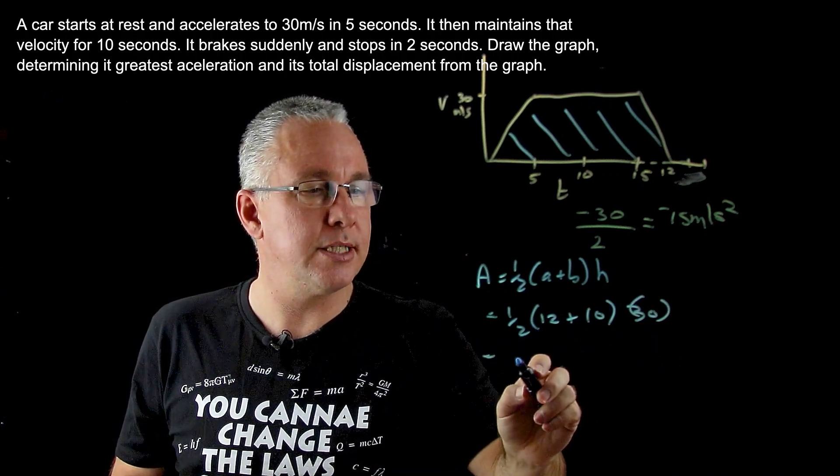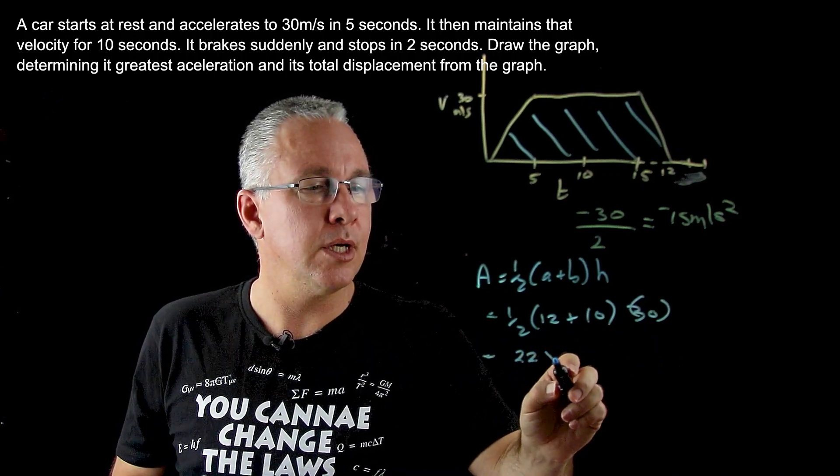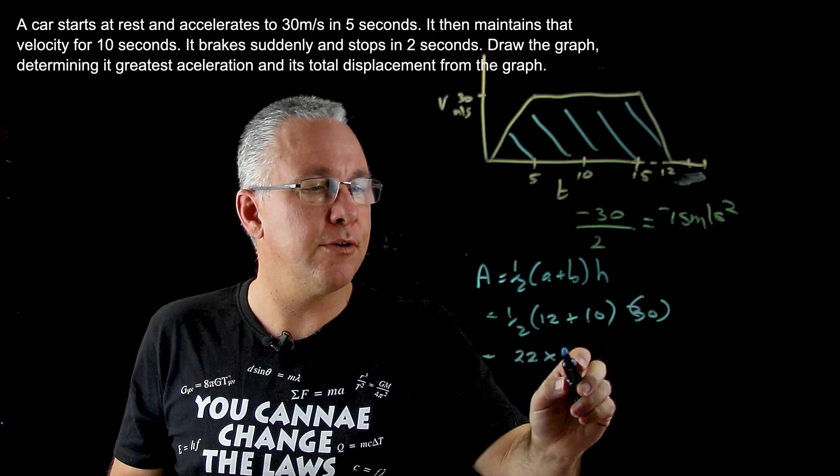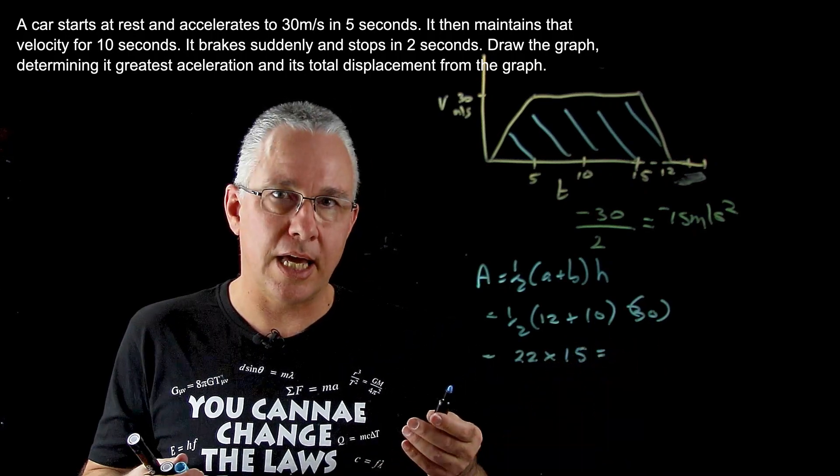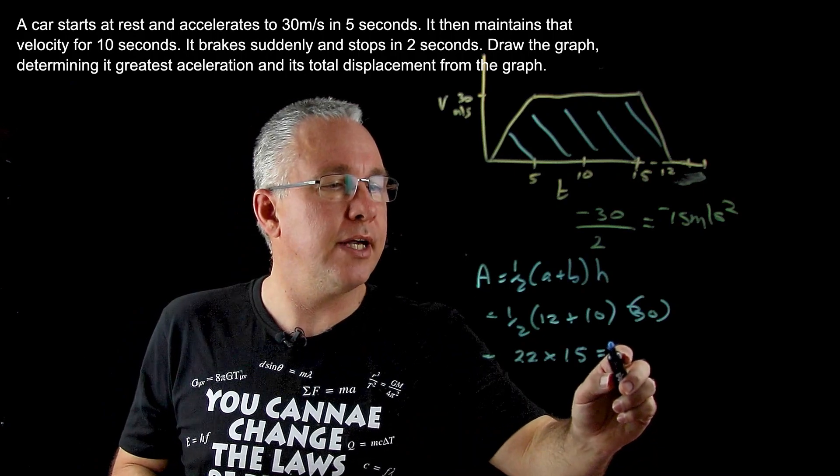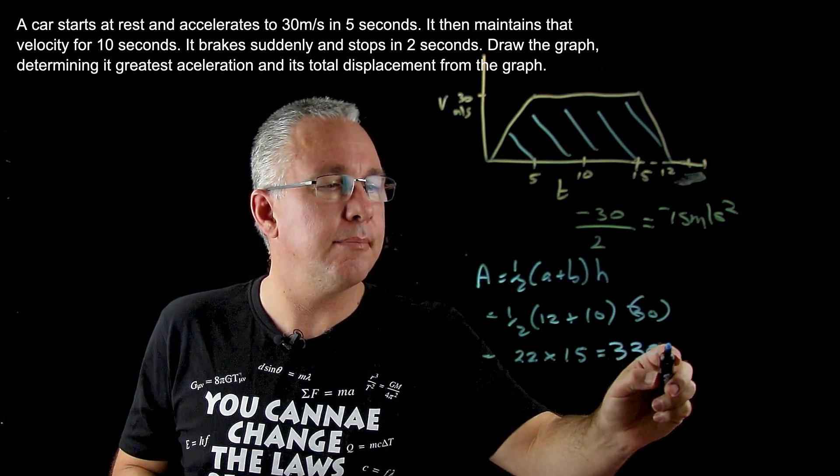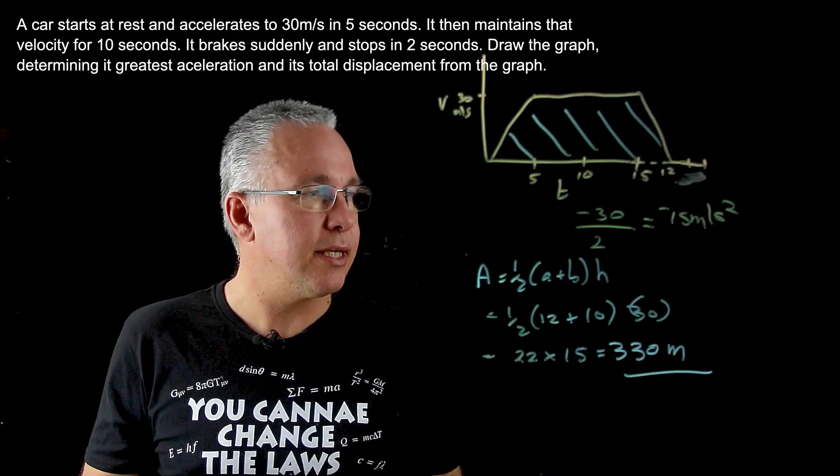We have 12 plus 10 which is 22. We multiply it by a half of 30 which is 15, and that gives us a grand total of 330 meters. So there's our answer.